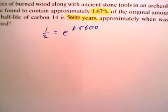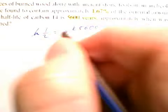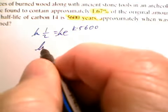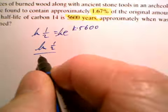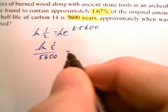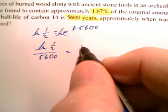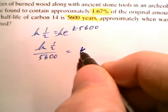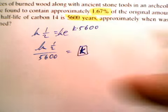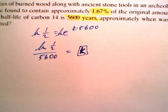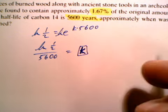We've done this a million times. Take the natural log of both sides, divide by what's left over, and you get ln of one-half over 5600 equals K. That's the value we plug into the calculator. Let's do that: ln of 0.5 divided by 5600. Store that in alpha A, and we're good to go. We have our value for K stored. Now we can answer the question.